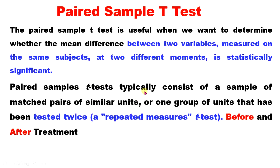The Paired Sample T-Test typically consists of a sample of matched pairs of similar units, or one group of units that has been tested twice. It is like a repeated measure — before and after treatment.